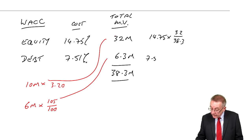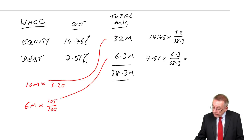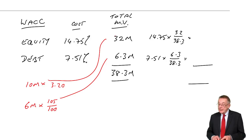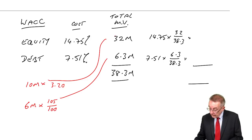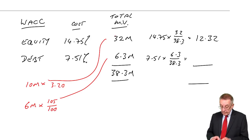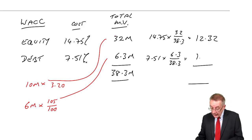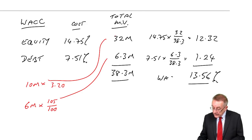The weighted average, weight by market values. Equity 14.75 times 32 out of a total of 38.3. Debt 7.51 times 6.3 out of a total of 38.3. Multiply and add. 14.75 times 32 divided by 38.3 plus 7.51 times 6.3 divided by 38.3 gives a total of 13.56%. There's the weighted average cost of capital.